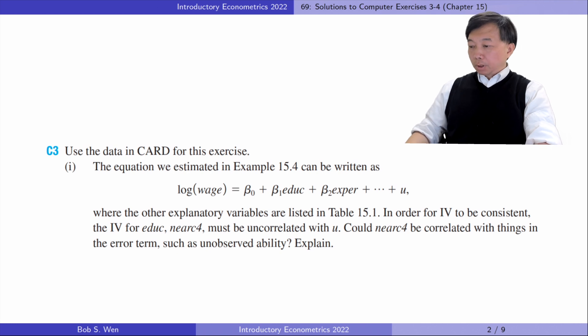Let's do computer exercise three. In part one, the model is as follows. For the IV estimate to be consistent, the IV for education must be uncorrelated with mu. Could near C4 be correlated with things in the error term such as unobserved ability? Explain.